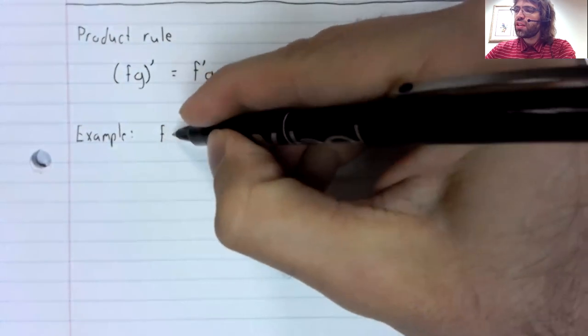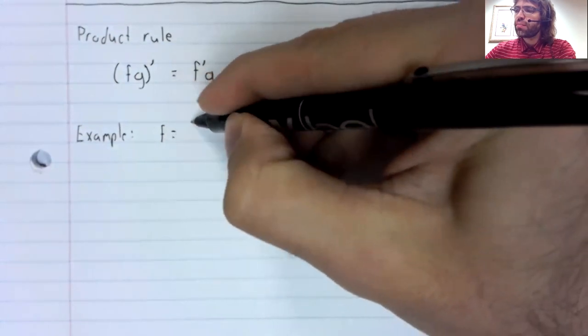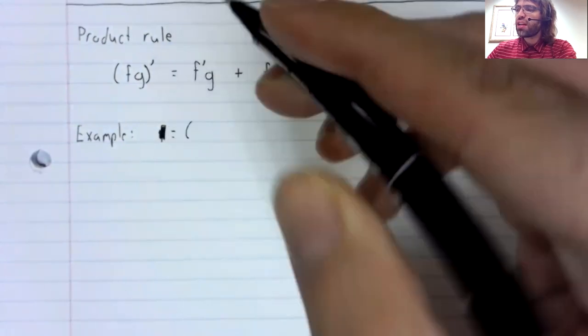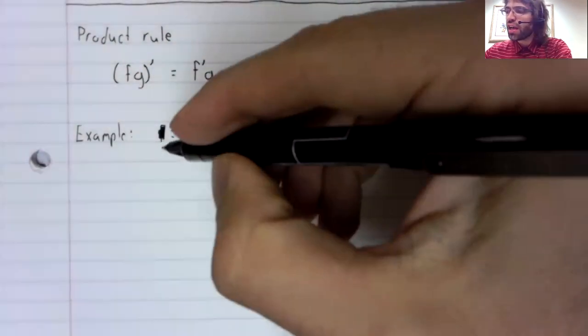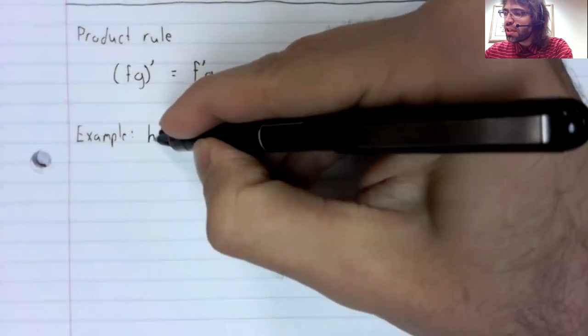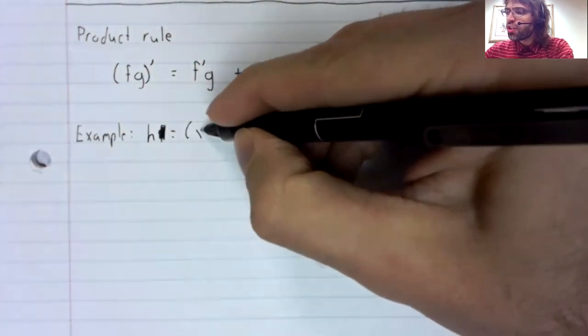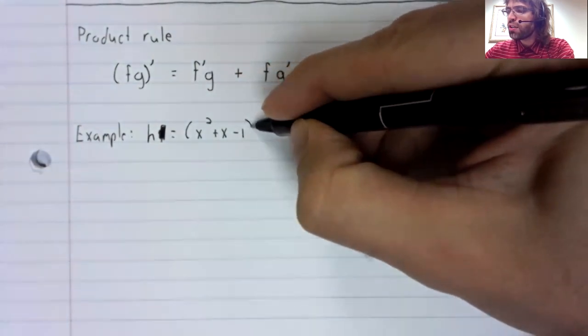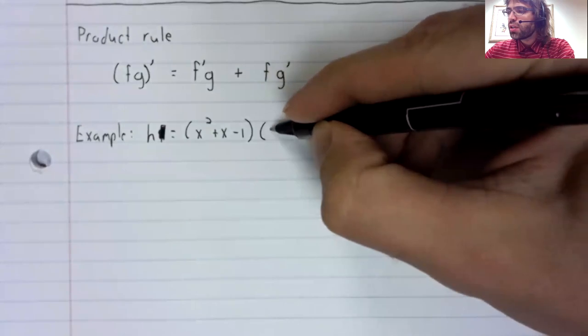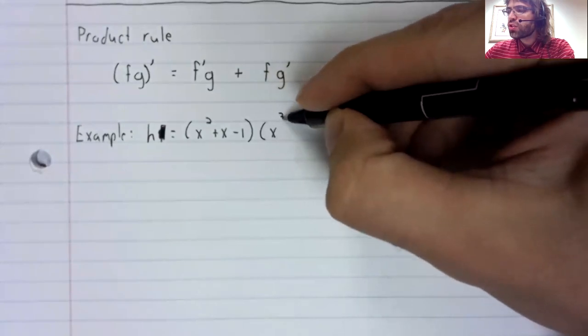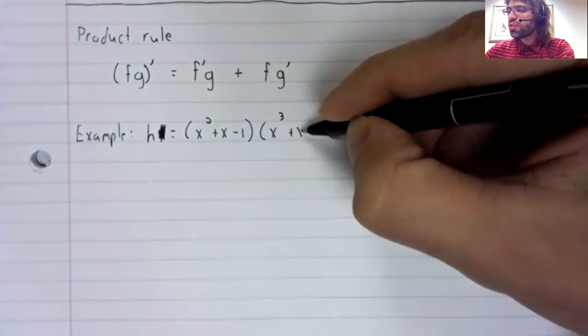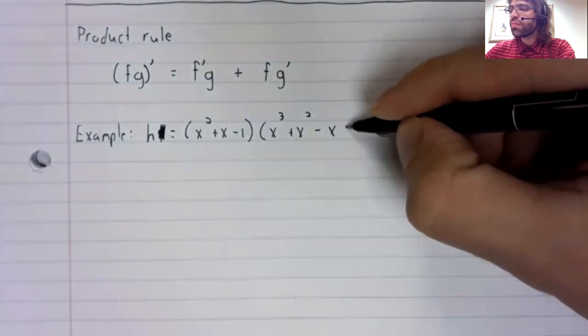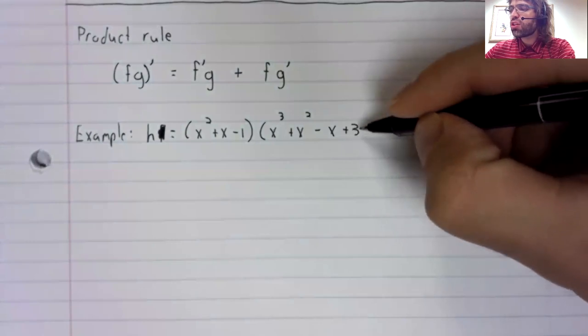Let's say we have, let's call this something other than f, since we just used f. Let's say we have h equals x squared plus x minus 1 times x cubed plus x squared minus x plus 3.